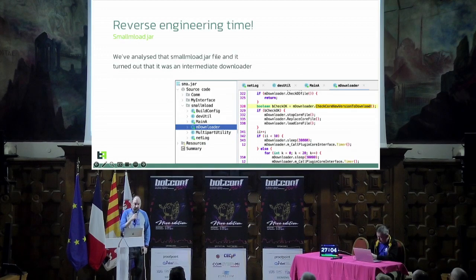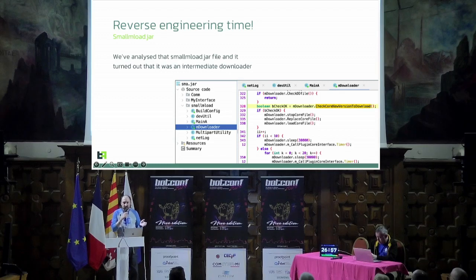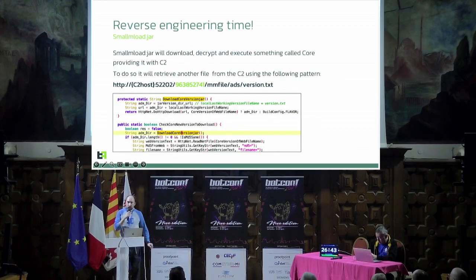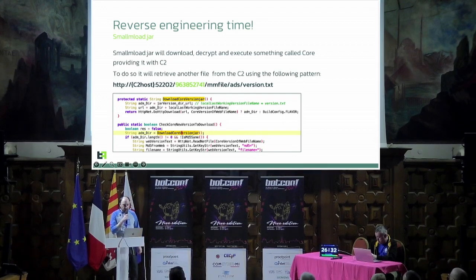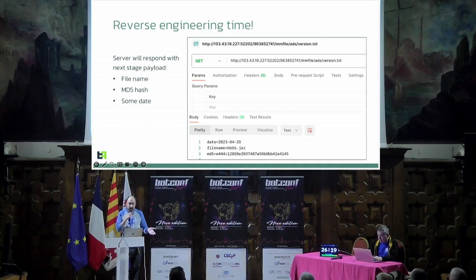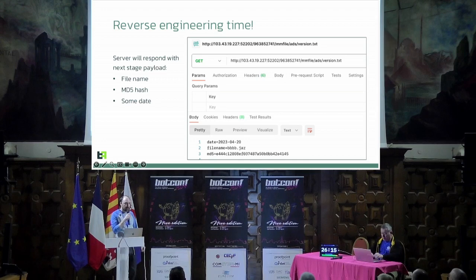I reverse-engineered the smallmload.jar. It's a super simple downloader that will download additional content called 'core.' To download the core, it asks the server for an additional file called version.txt — and again, our fancy number in the URL path. Funny enough, this file contained three fields: the date, the filename of the second-stage payload to be downloaded, and the MD5 hash of that payload.